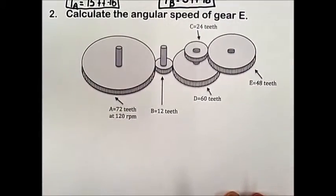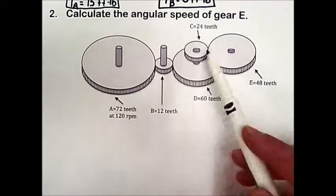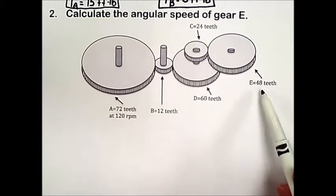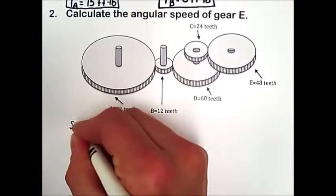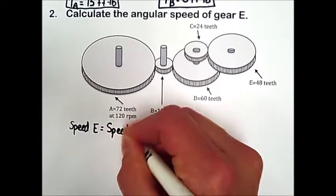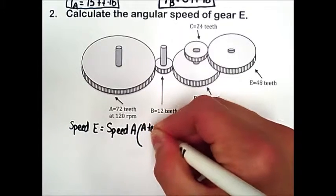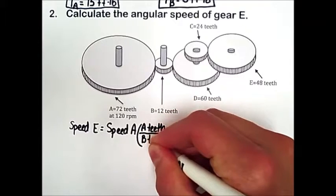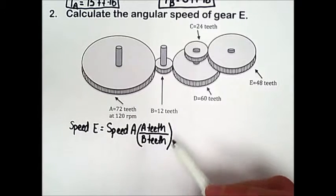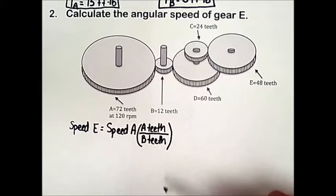Number 2: calculate the angular speed of gear E. Here we have several gears in a gear train. Gear A is the initial driver gear with 72 teeth rotating at 120 rpm. Gear B has 12 teeth, gear C has 24 teeth, gear D has 60 teeth, and gear E has 48 teeth. The speed at gear E equals the speed of gear A multiplied by the gear ratio — the number of teeth gear A has divided by the number of teeth gear B has.